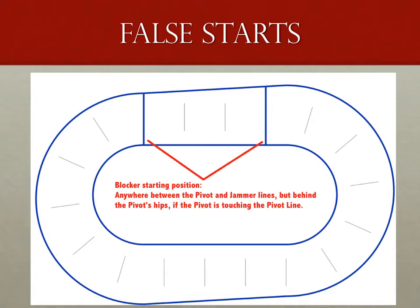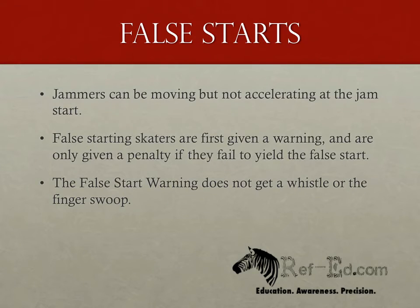If a pivot is touching the pivot line, all other blockers must be behind that pivot's hips, or if both pivots are touching the line, behind the hips of the furthest-back pivot. Jammers cannot be accelerating at the jam start, or they get a false start call — they can be moving, just not accelerating. Some jammers may try to time themselves against the five-second call from the jam timer, so if you're the jammer referee, be cognizant of what's happening as that jam starts.